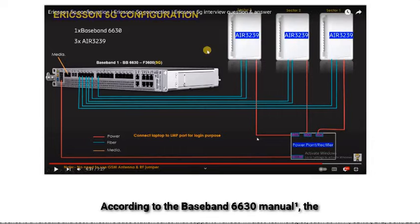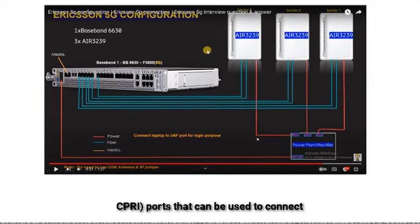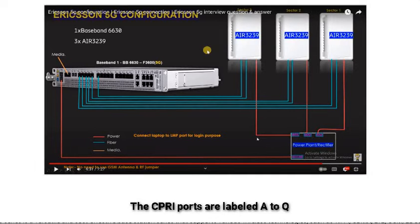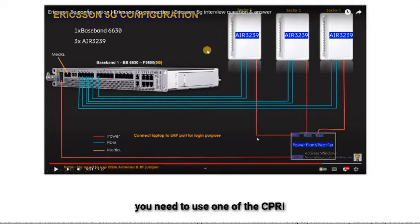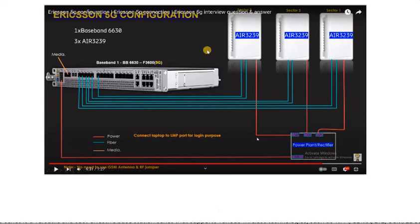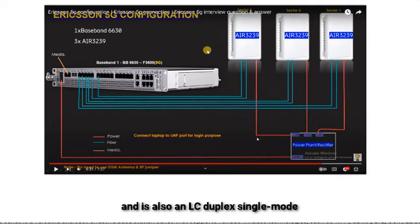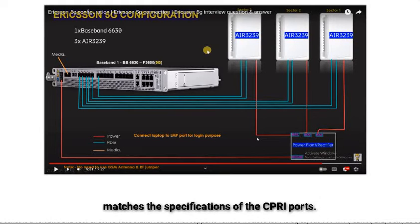According to the Baseband 6630 Manual, the baseband unit has 15 common public radio interface ports that can be used to connect to radio units such as ARR3239. The CPRI ports are labeled A to Q on the front panel of the baseband unit. The optical cable type for the CPRI ports is LC duplex single-mode fiber. The CPRI port on the ARR3239 is located on the bottom side of the unit and is also an LC duplex single-mode fiber connector.